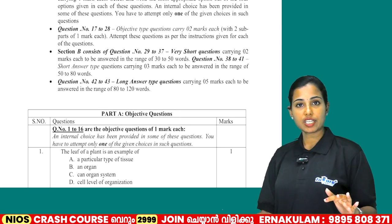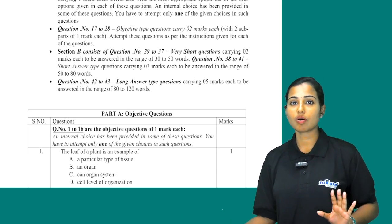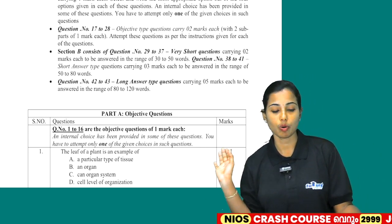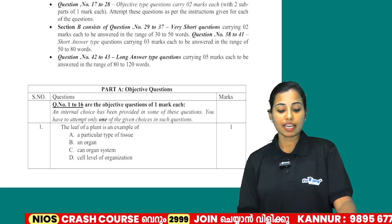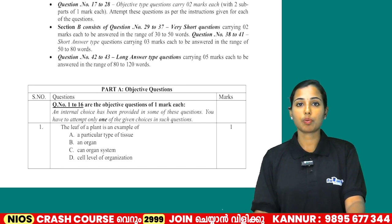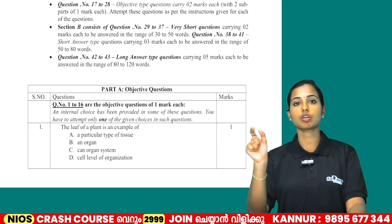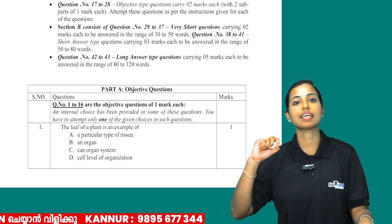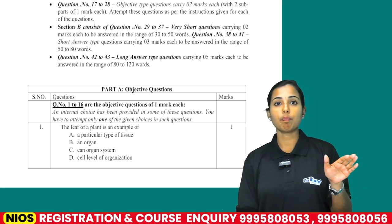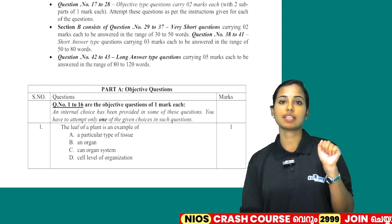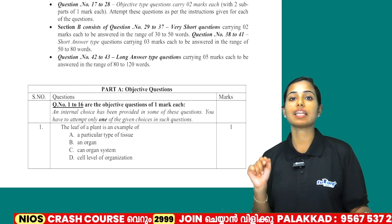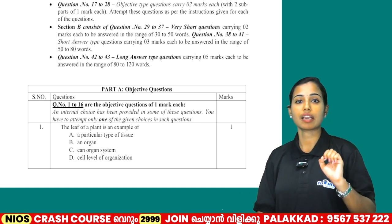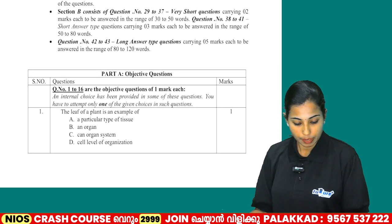So to summarize: Section A has multiple choice questions with 4 answers, one correct answer per question. Section B has very short answer questions and short answer questions. Questions 38 to 41 are short answer questions with 2 marks, and questions requiring 3 marks are the short answer type.